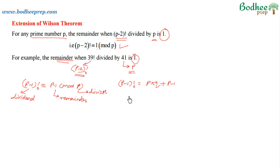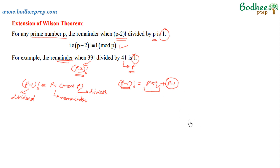One thing we need to observe is that the left-hand side is a multiple of (p-1), so the right-hand side would also be a multiple of (p-1). We can see that the (p-1) term on the right is (p-1) itself, so it is a multiple of (p-1). Therefore, the p·q term should also be a multiple of (p-1). Since p is a prime number, p itself cannot be a multiple of (p-1), so the quotient q must be some multiple of (p-1).